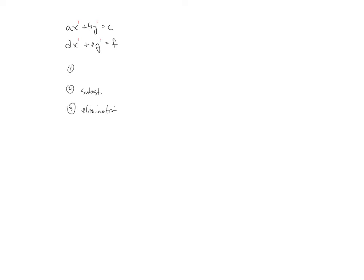The first one that you probably learned actually was the graphing method. The graphing method is very important to understand so that we can transition to nonlinear systems. If you have two lines and you're looking to find the solution to the system, you would graph them and your graph could look something like this. The solution to the system would be right where they cross — the point of intersection.